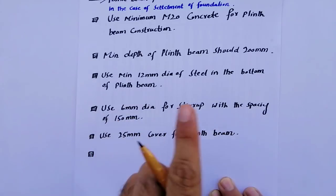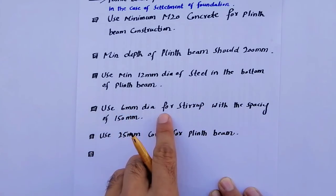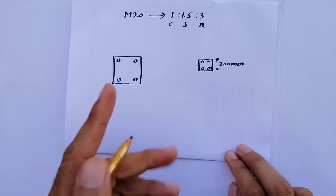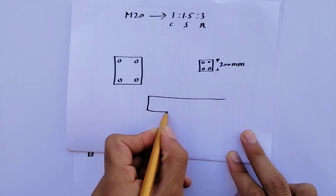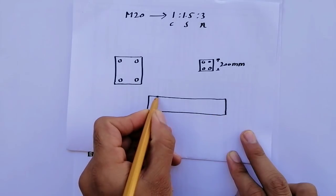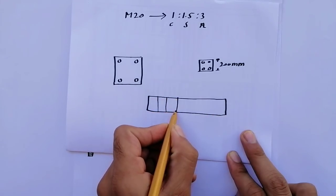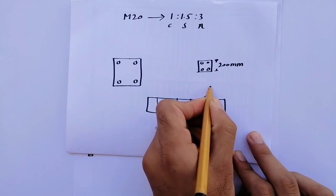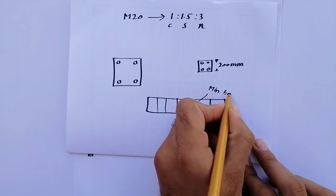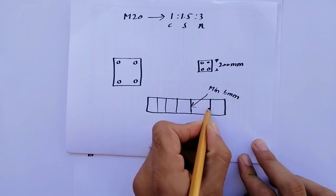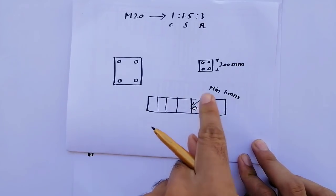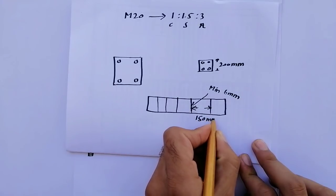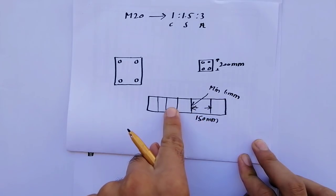The fourth point: use 6 millimeter diameter stirrups — that is the minimum stirrup diameter. As you can see in this longitudinal section of the plinth beam, the stirrups are spaced at 150 millimeters. So when using 6mm diameter stirrups in a plinth beam, the spacing between stirrups should be 150 millimeters.